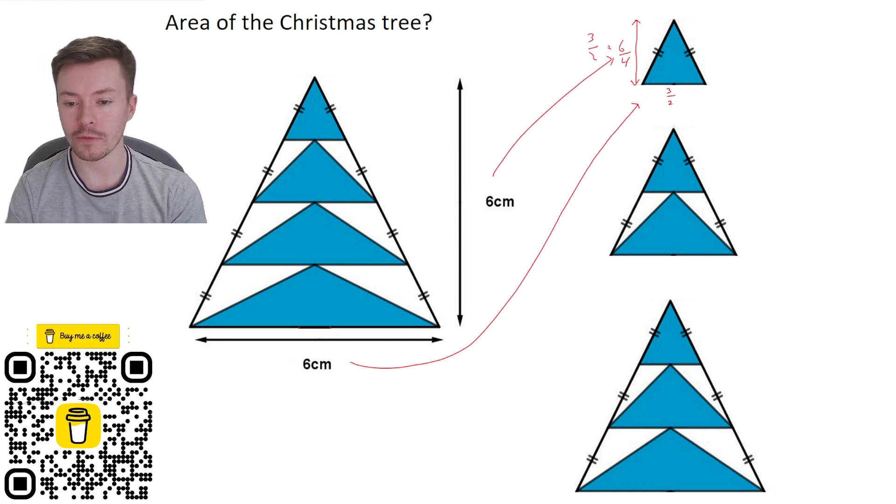Now for the next one, we've got two of these diagonals. And so two out of four, that's half. This is going to be a half. It's going to be a half of the height. So a half of six, which is three. And a half of the base, which is also three.